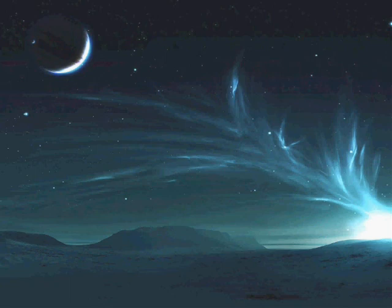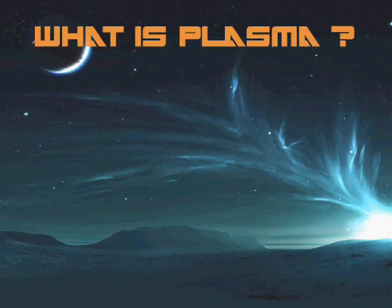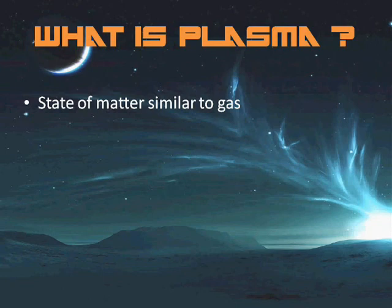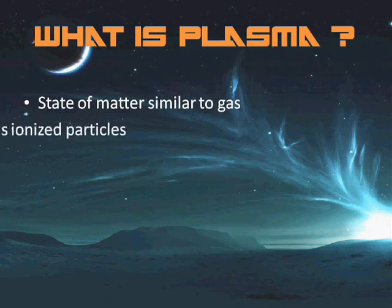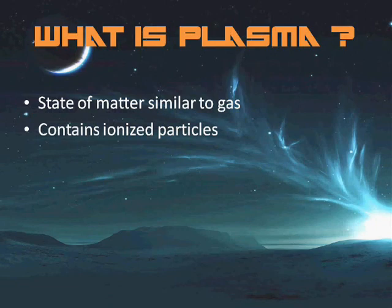Now I am going to describe what plasma actually is. It is a state of matter similar to gas in which a certain portion of the particles are ionized. The basic premise is that heating a gas dissociates its molecular bonds, rendering it into its constituent atoms. Further heating leads to ionization, turning it into a plasma containing charged particles — positive ions and negative electrons. The presence of a non-negligible number of charged carriers makes the plasma electrically conductive so that it responds strongly to electromagnetic fields.